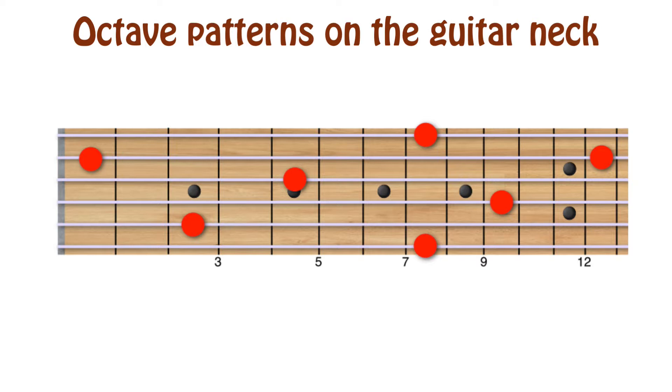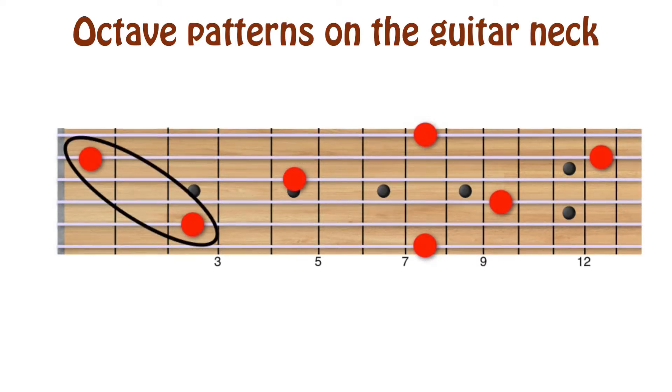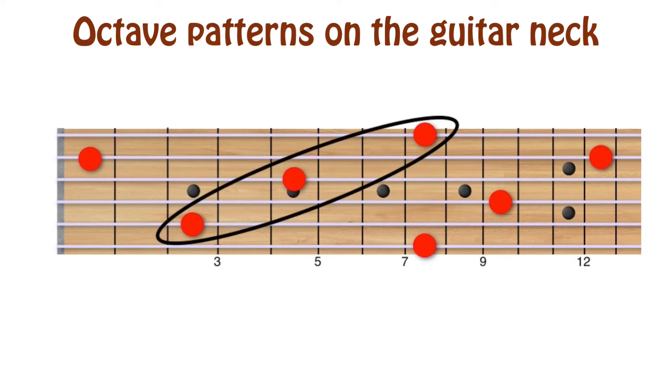Here's octaves basic C formation as outlined above. Note from the fifth string goes two strings over to the third string, then two frets up. From that note, go two strings over and three frets up.